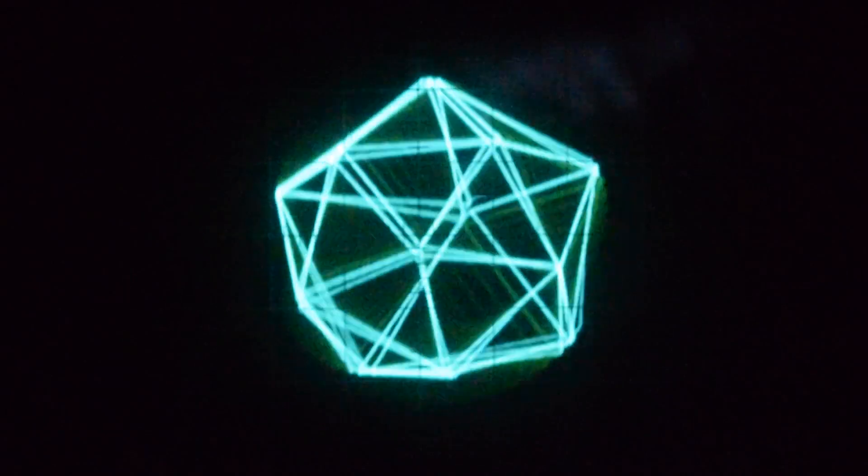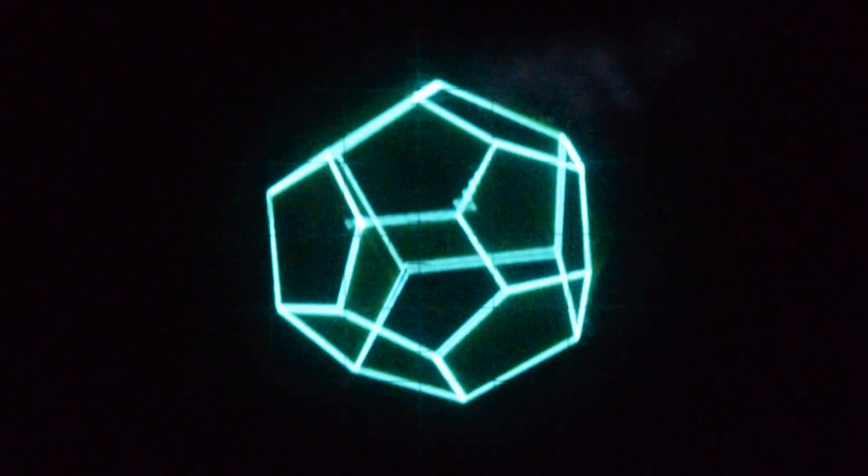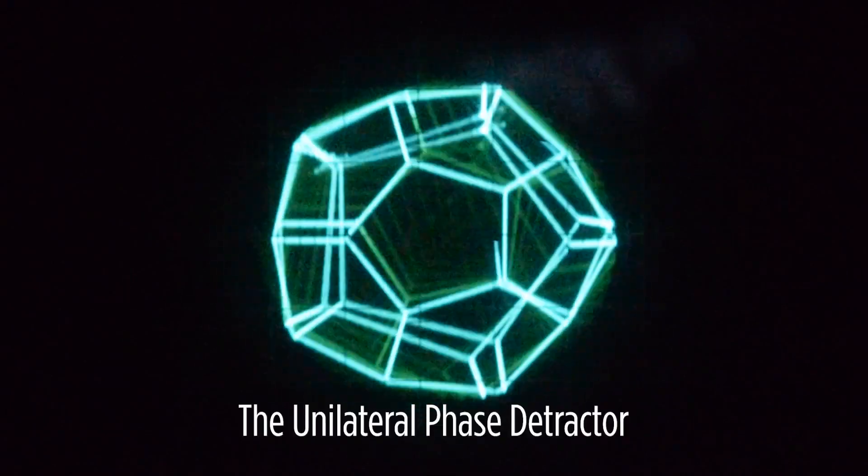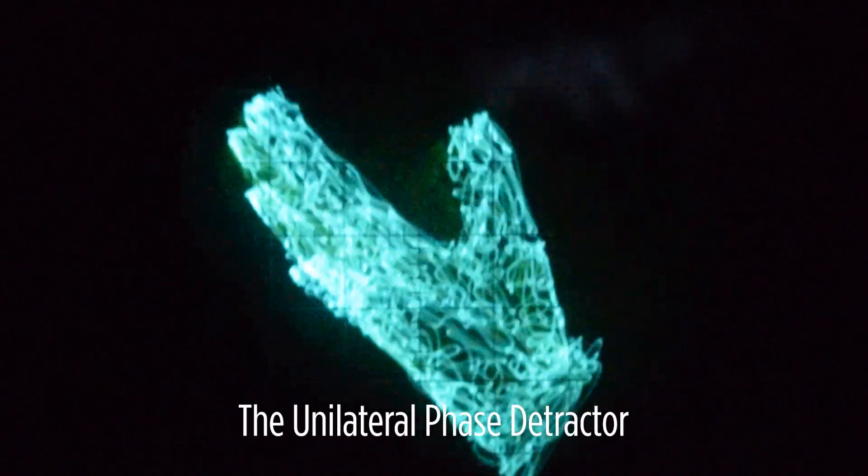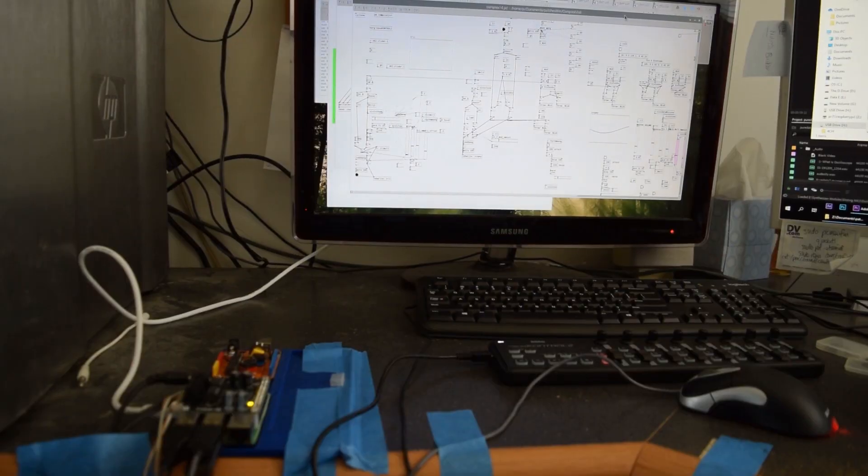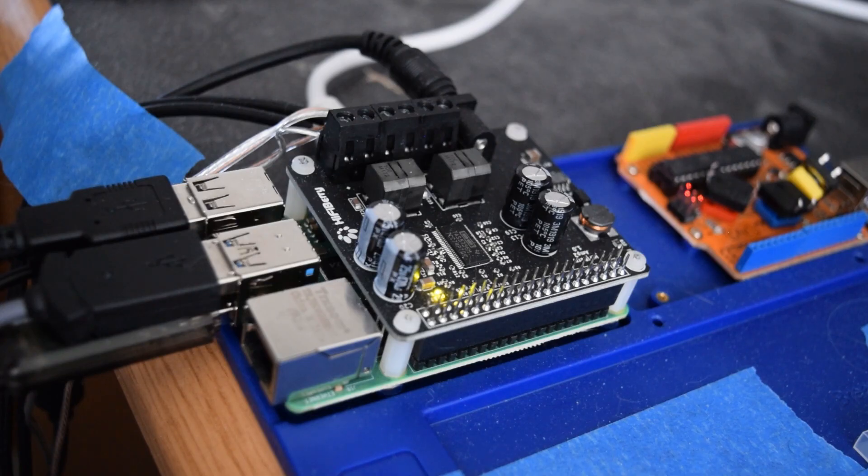So here's an update to my oscilloscope visualizer project that I'm calling the unilateral phase detractor. It runs on this Raspberry Pi that I've taped to the desk,